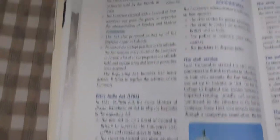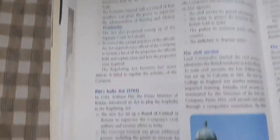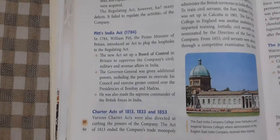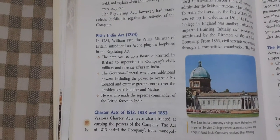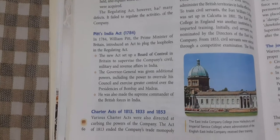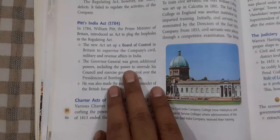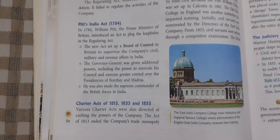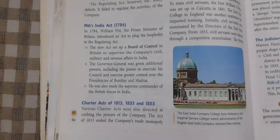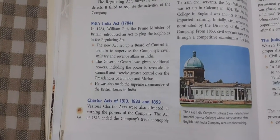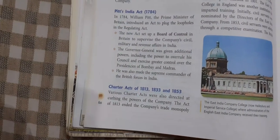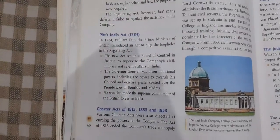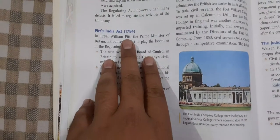The second feature of Pitt's India Act was that the Governor General was given additional powers, including the power to overrule his council. That means the Governor General could disregard the advice of the four council members and proceed on his own. He was also made the supreme commander of all British forces in India.